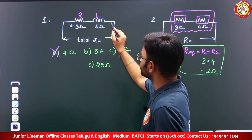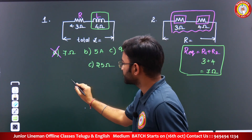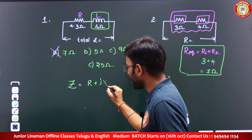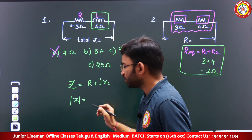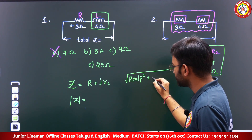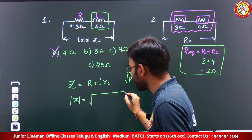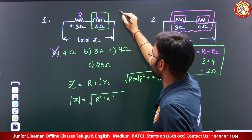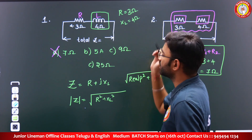But look at this first question. The load given here is a resistive load and an inductive load. When an inductive load is given, we talk in terms of impedance. Impedance Z equals R plus jXL. When we have an inductive load, we need to find the magnitude of impedance. Magnitude of impedance equals square root of (real part squared plus imaginary part squared). Here resistor R equals 3 ohms and inductive reactance XL equals 4 ohms.